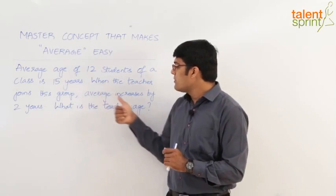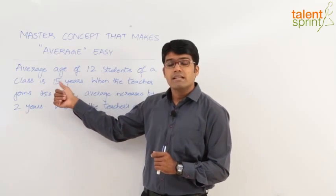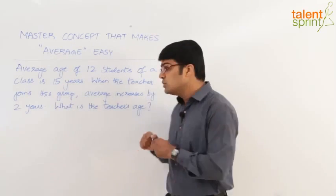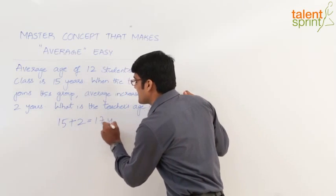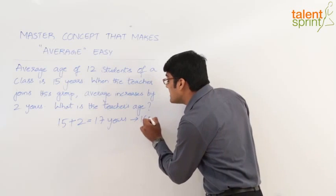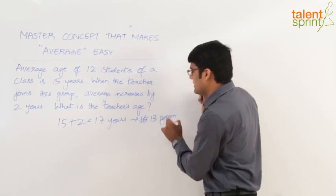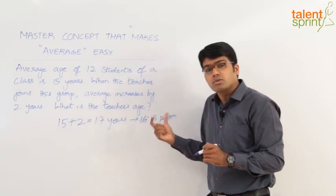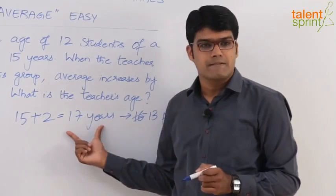Now when the teacher joins this group, average increases by 2 years. The actual average was 15. Now the average is increased by 2 years. That means the new average is 15 plus 2, that is 17 years. And this 17 years is the average for how many persons? It is for 13 persons. There are 12 students and now teacher has also joined the group. So total 13 persons.